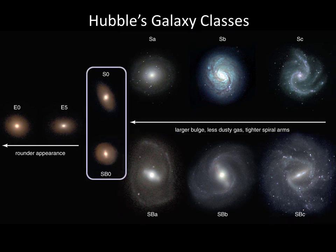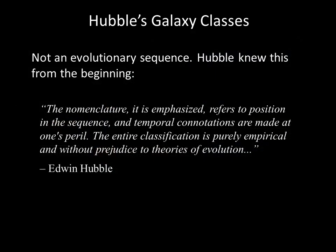Lenticular galaxies are designated S0. Astronomers had once thought the Hubble sequence was an evolutionary sequence in which galaxies flattened and spread out as they aged. But we now know that this is not the case — the evolution of galaxies is much more complex. Edwin Hubble knew this from the beginning.